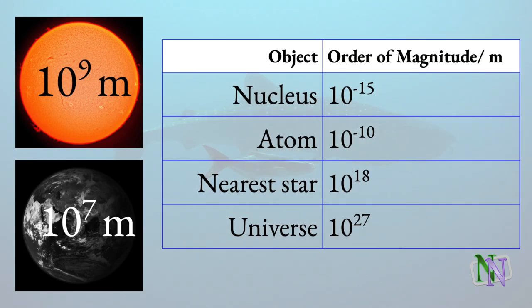There are many relevant orders of magnitude in physics, and it's hard to know all of them. You would find it very useful to know these different sizes, though. A nucleus has the same order of magnitude as a proton or a neutron: 10 to the minus 15. The atom is typically 10 to the minus 10 meters, also known as an angstrom. The Earth and Sun are respectively 10 to the 7 and 10 to the 9 meters across, and it's useful to realize that the Sun is 100 times larger than the Earth. The distance to Proxima Centauri is 10 to the 18 meters, and the universe that we can detect is 10 to the 27 meters across.